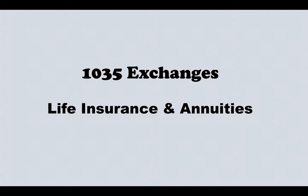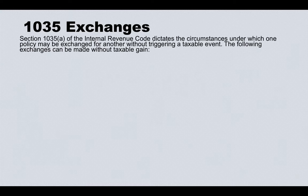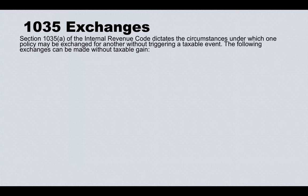In this video I'm going to talk about 1035 exchanges, which involve life insurance and annuity contracts. Section 1035(a) of the Internal Revenue Code dictates the circumstances under which one policy may be exchanged for another without triggering a taxable event. The following exchanges can be made without taxable gain: life insurance, annuities, endowments, and long-term care insurance.